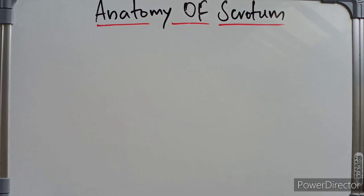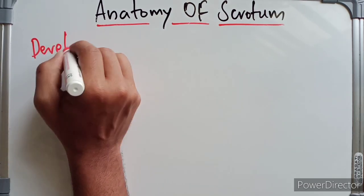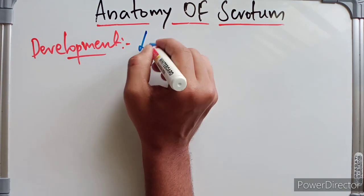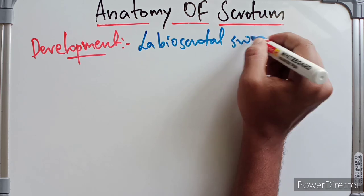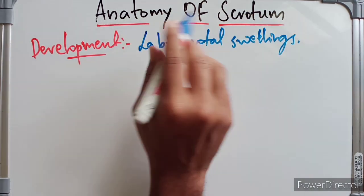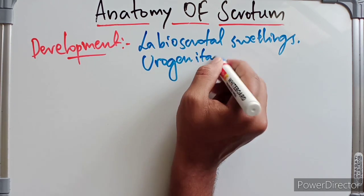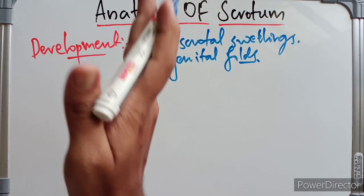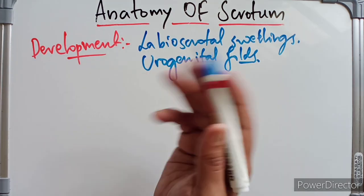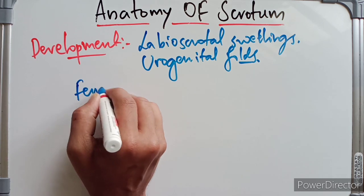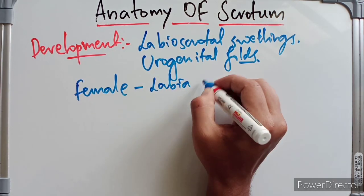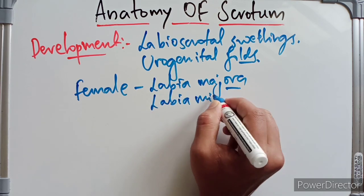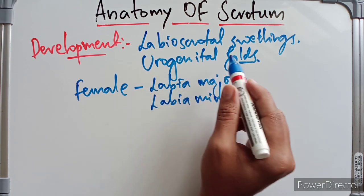Regarding development, the scrotum develops from the labioscrotal swellings and the urogenital folds, which fuse in the midline to form the scrotum. The site of fusion is marked by the midline fibrous ridge or raphe. In females, the labioscrotal swellings form the labia majora, while the urogenital folds remain separate and form the labia minora.